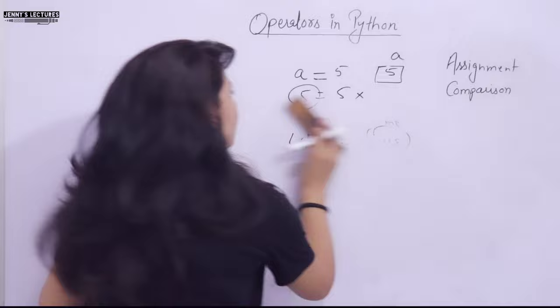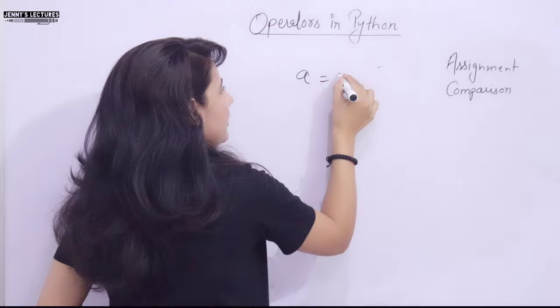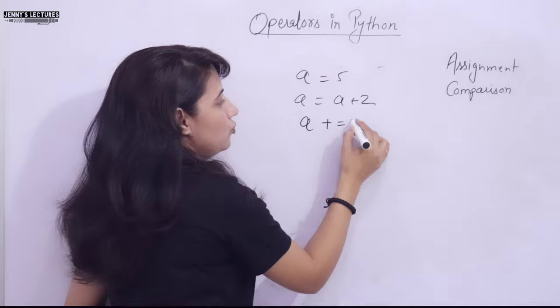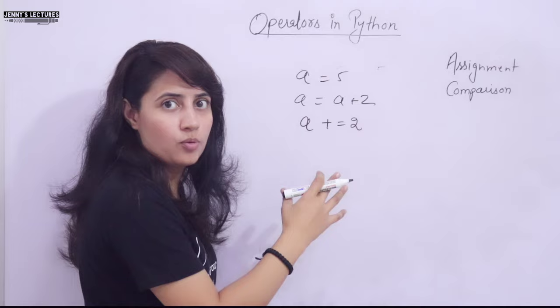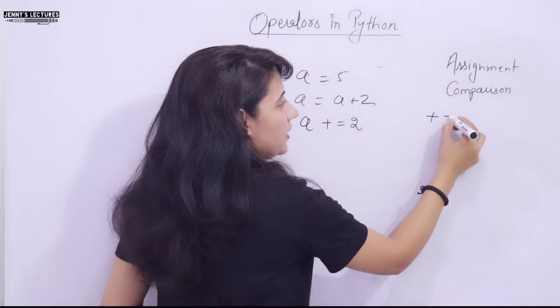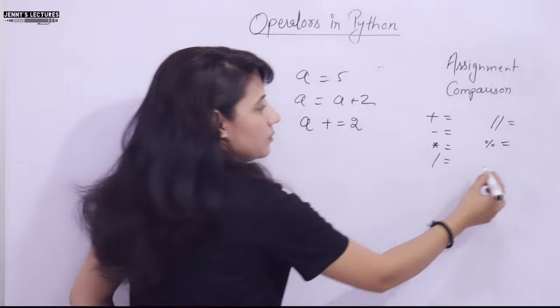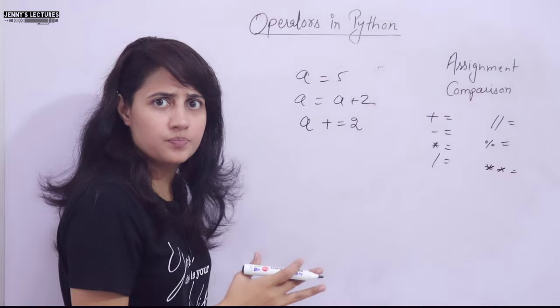Now, if I write 'a = 5' and then 'a = a + 2', we can write this more concisely as 'a += 2'. This is called the shorthand assignment operator. Instead of writing the long form, we use shorthand like '+='. Similarly we have '-=', '*=', '/='.